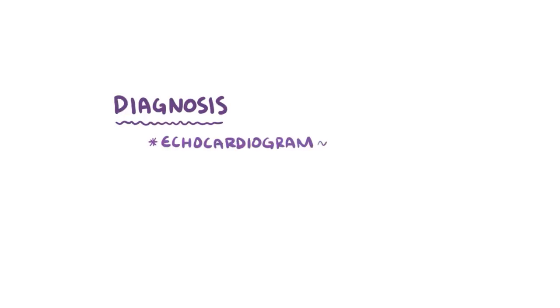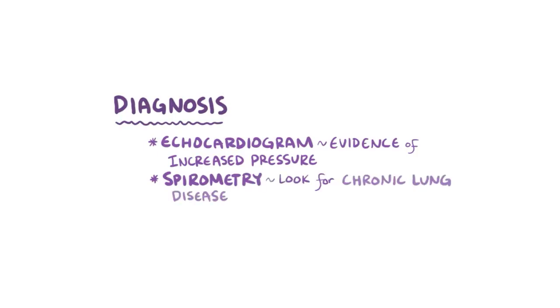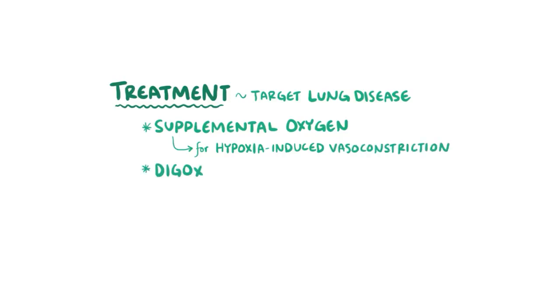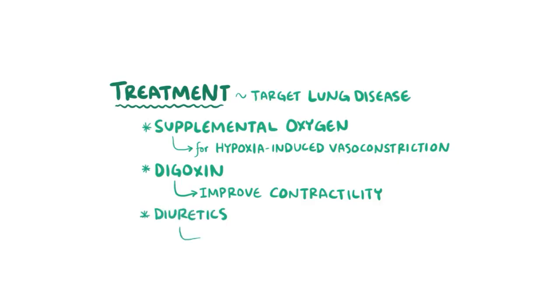The diagnosis of cor pulmonale is usually made with an echocardiogram that shows evidence of increased pressure in the pulmonary arteries and the right ventricle. Follow-up tests can be done to identify the underlying cause; for example, spirometry can be done to look for chronic lung disease. Treatment for cor pulmonale targets this underlying lung condition. Supplemental oxygen can help with hypoxia-induced vasoconstriction, digoxin can help improve the contractility of the heart, and medications like diuretics can help reduce the overall fluid buildup in the body.